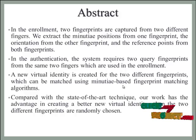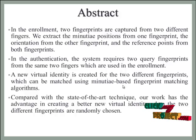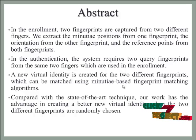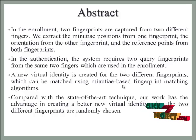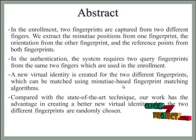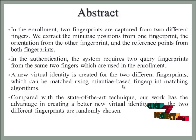With the help of an existing fingerprint reconstruction approach, we are able to convert the combined minutiae template into a real-looking combined fingerprint. Thus, a new virtual identity is created for the two fingerprints, which can be matched using minutiae-based fingerprint matching algorithms. The experimental results show that our system can achieve a very low error rate, with FRR (false rejection ratio) of 0.4% at FAR (false acceptance ratio) equal to 0.1%. Compared with state-of-the-art techniques, our work has the advantage of creating a better new virtual identity when two different fingerprints are randomly chosen.